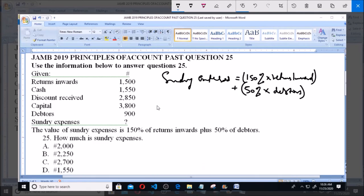Which equals 150% of returns inward, which is 1,500, plus 50% of debtors, which is 900.